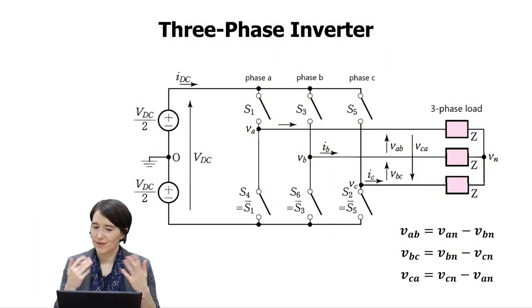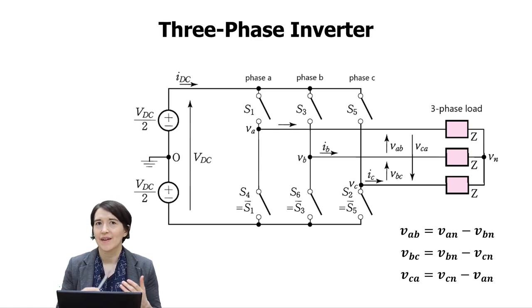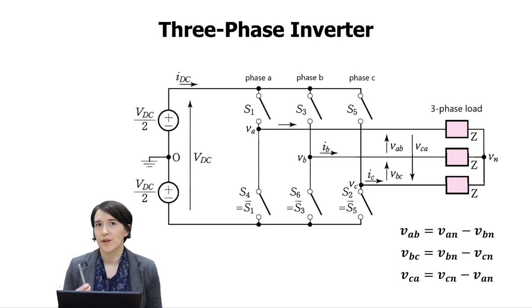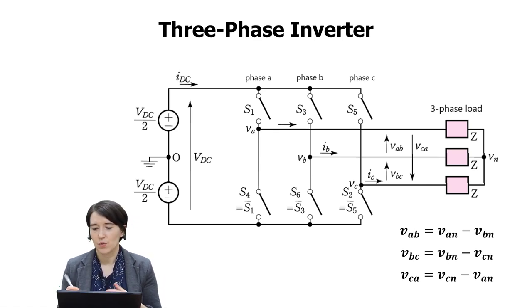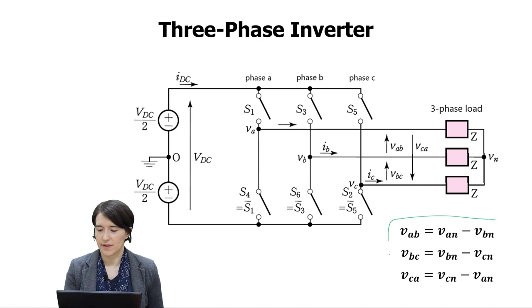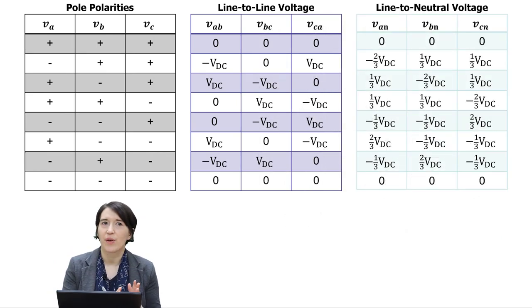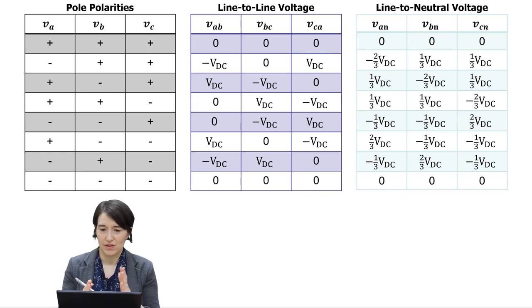We'll go through each of the switching states in the order of the switching sequence, and then look at how that translates to the output voltages in the three-phase load. Here is our three-phase inverter diagram with six switches. Remember, there are line-to-line voltages between the phases, and line-to-neutral voltages — the relationship shown here lets you translate between them. These tables map the different polarities to the line-to-line voltages and the line-to-neutral voltages.